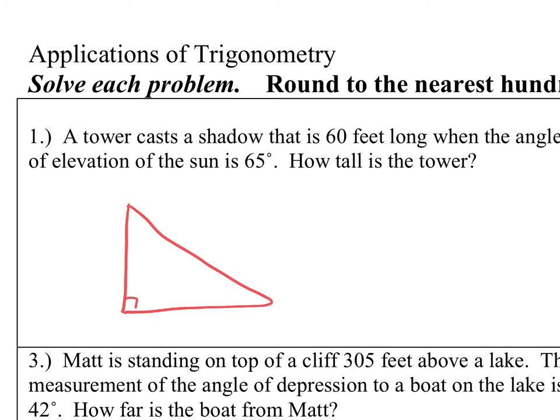It says a tower casts a shadow that's 60 feet long. Shadows are on the ground — down here. This right here is 60 feet. If you need to draw yourself a little picture — here's your tower, there's the sun up here. It says the angle of elevation is 65 degrees. Where is my angle of elevation in the way that I drew my triangle? The bottom right-hand corner — that's always going to be my angle of elevation. How tall is the tower? They're asking for the height.